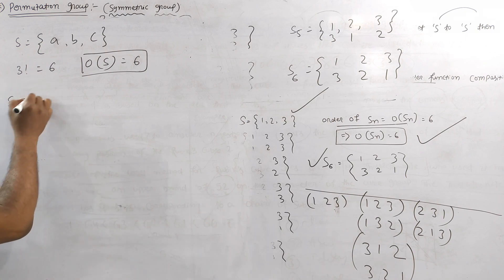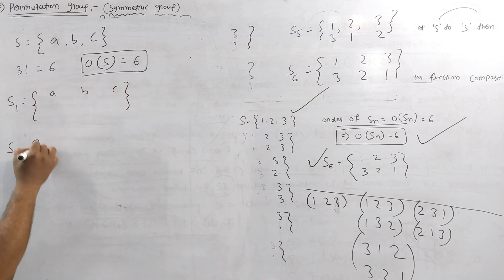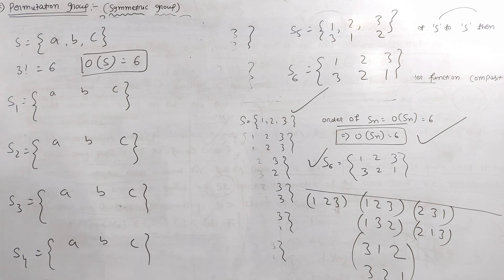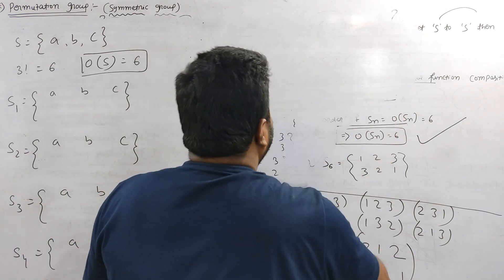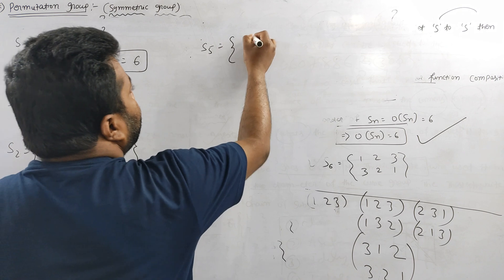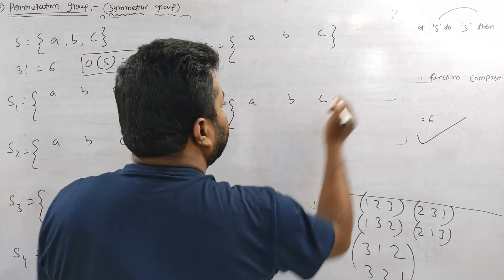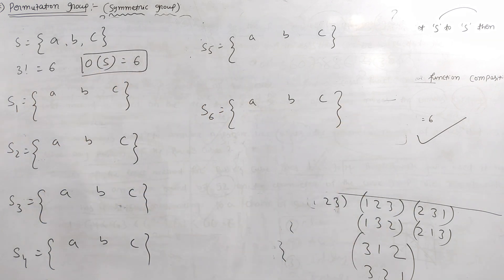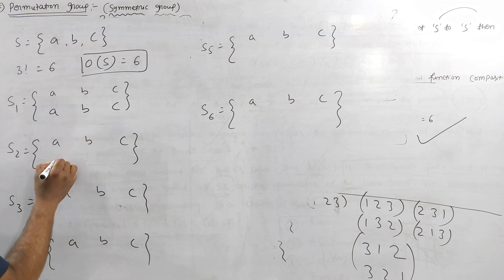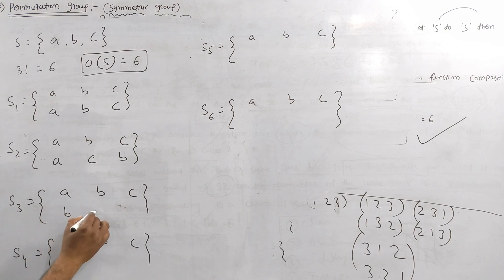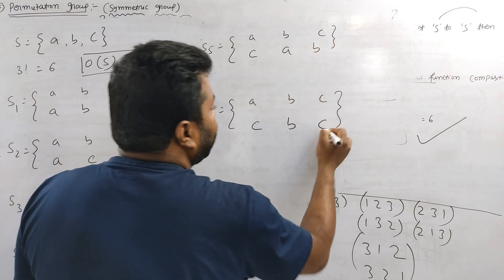Let's see: S1 maps A, B, C. S2 maps A, B, C. S3 maps A, B, C. S4 maps A, B, C. S5 maps A, B, C. S6 maps A, B, C. Continuing to write A, B, C — once you put A, B, C and rearrange: A B C, A C B, B A C, B C A, C A B, C B A. So I have a total of 6 permutations.